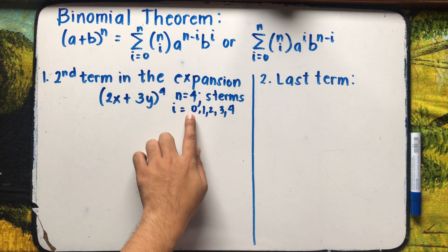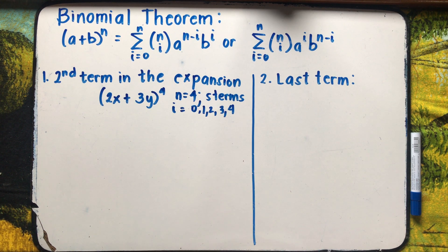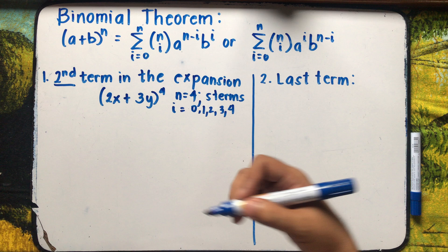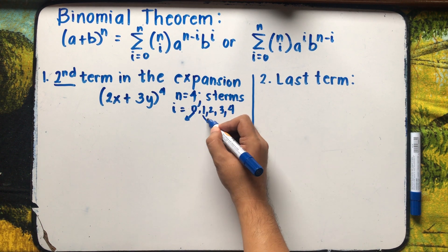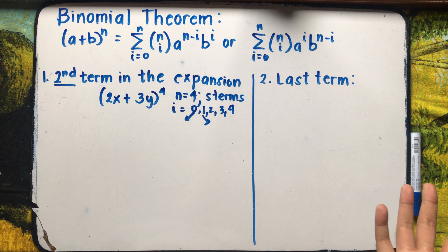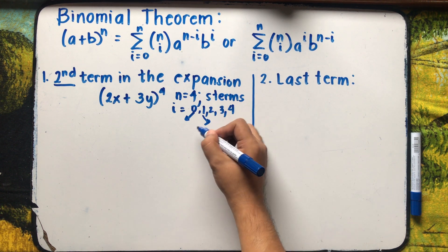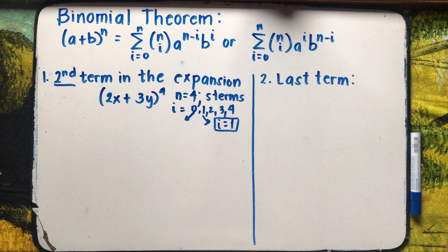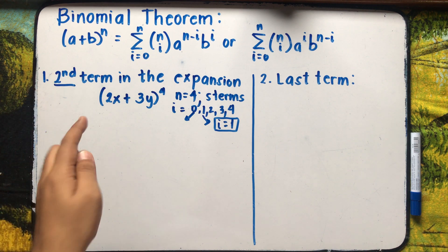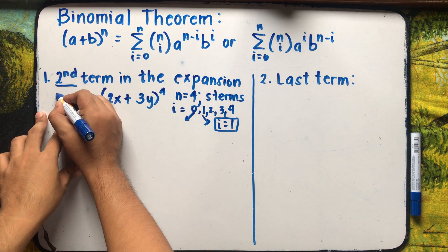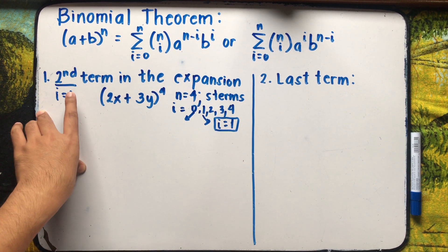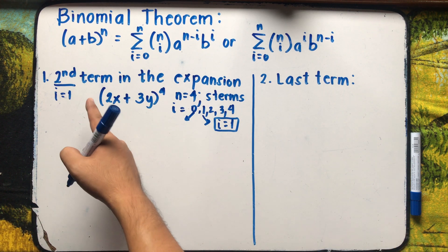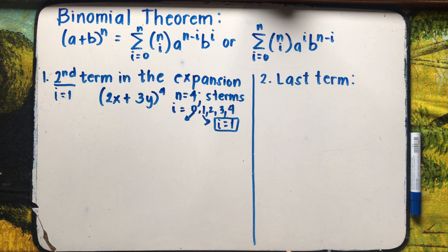We're asked to get the second term. The first term corresponds to i=0, and the second term corresponds to i=1. Always remember: if you're asked to get a specific term, subtract 1 from that term number. For the second term, i equals 2 minus 1, which is 1. Where a equals 2x and b equals 3y.